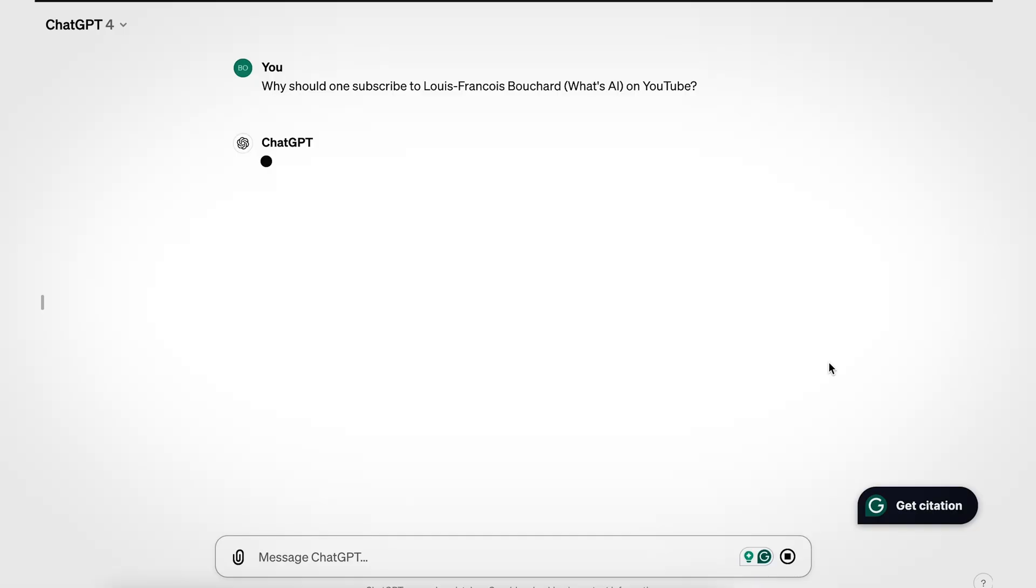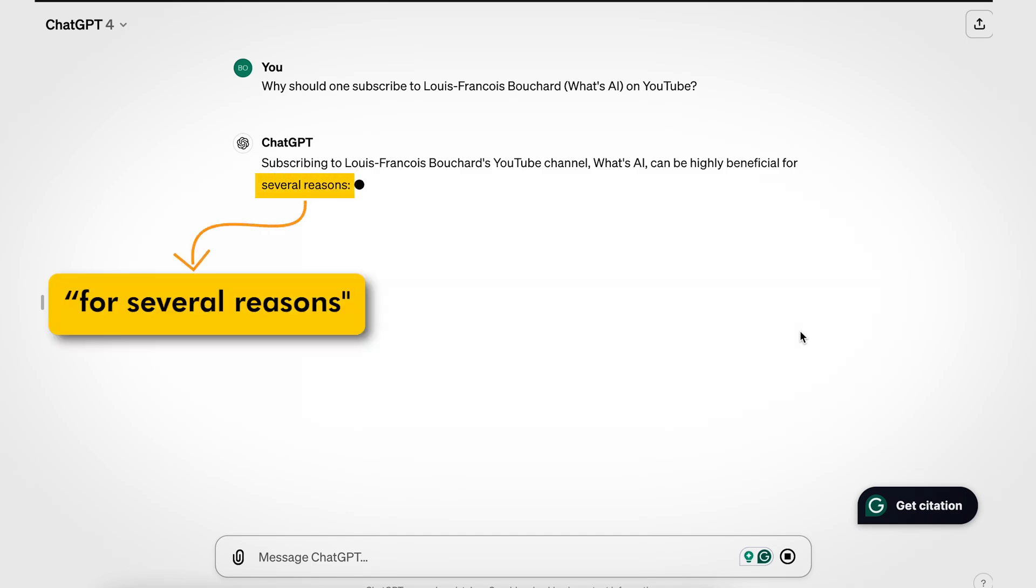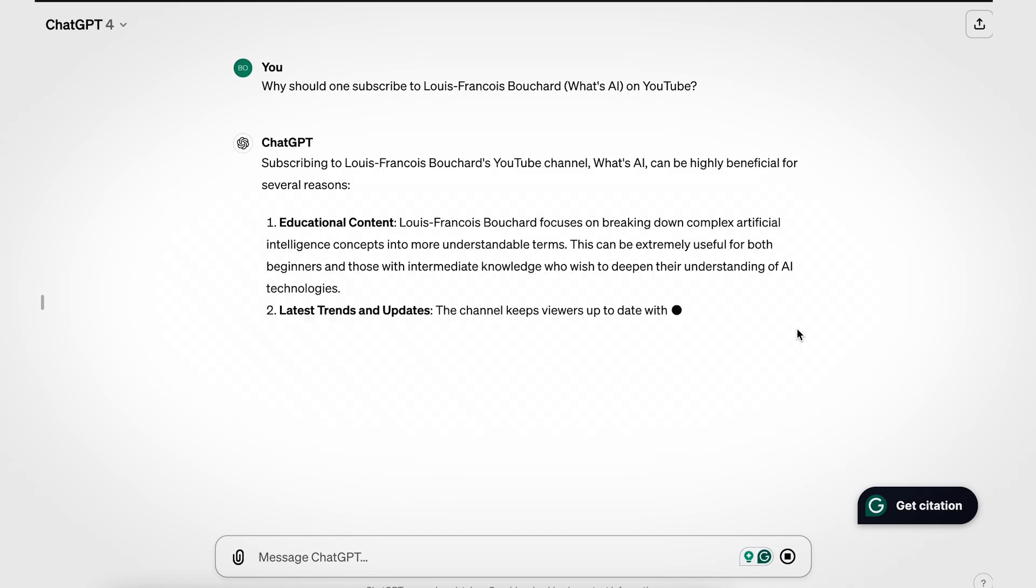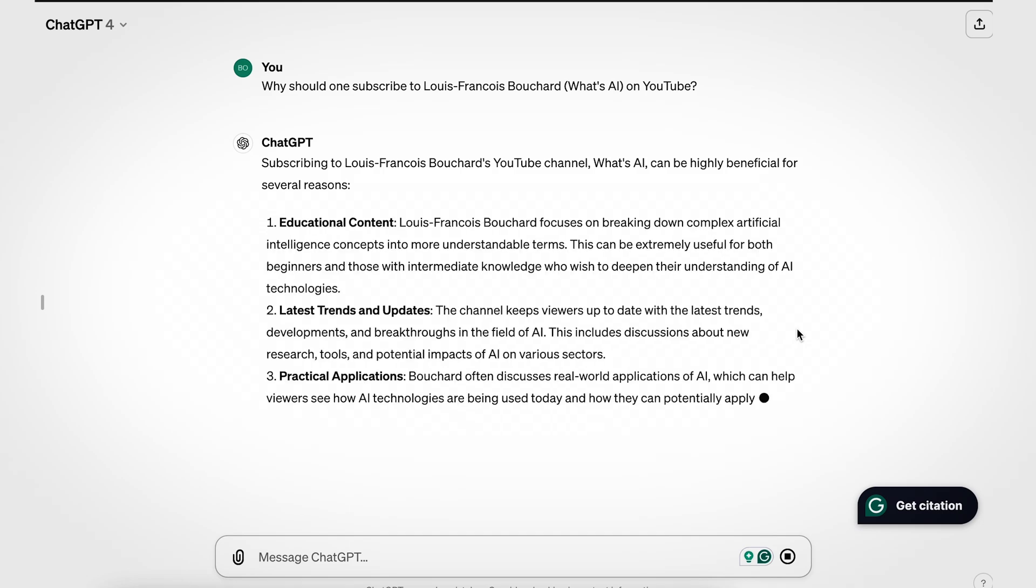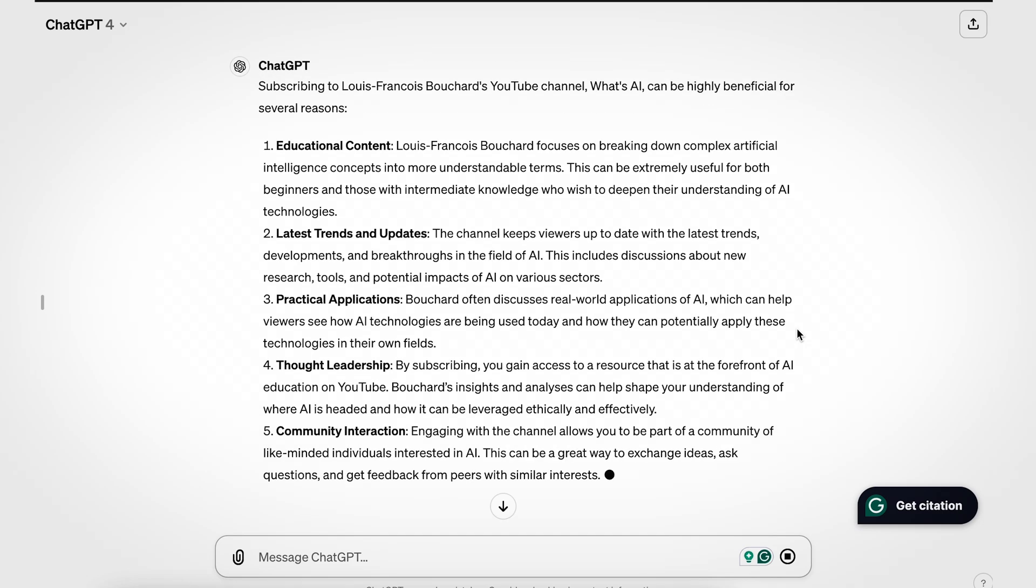So there are a couple of things here to understand. First, the model started generating words that would make the most sense, reformulating the question as we've seen in school, and following up with 'for several reasons', in a colon. This is because in its training data, most questions similar to this one were answered with such a bullet list, so it just copied this style.